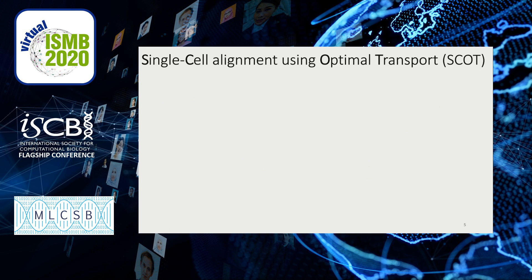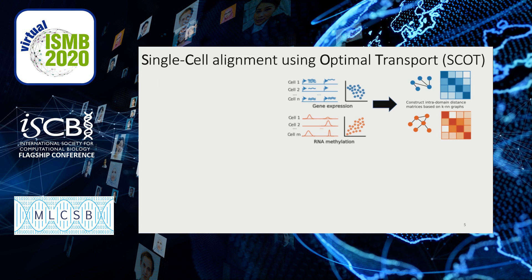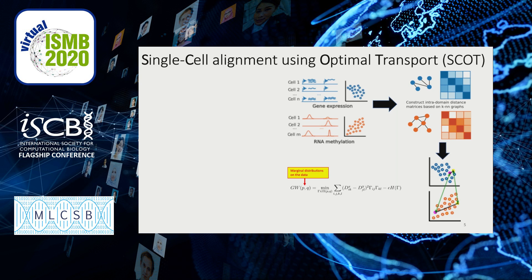Our method is Single-Cell alignment using Optimal Transport, or SCOT for short. We start with two datasets and construct k-nearest neighbor graphs on them. From these k-nearest neighbor graphs, we construct pairwise distance matrices. Then we solve the optimization problem, for which we need to input marginal distributions on the original datasets. We use uniform distributions, which means we're weighting each point equally likely. We then look for a probabilistic coupling matrix to tell us how all the points in the two domains are related.